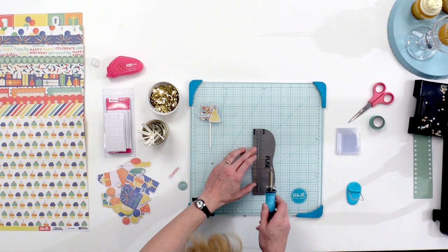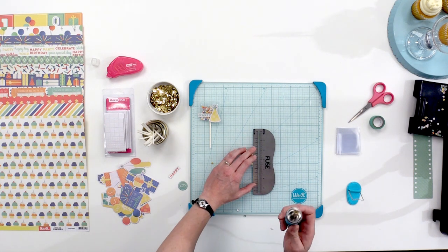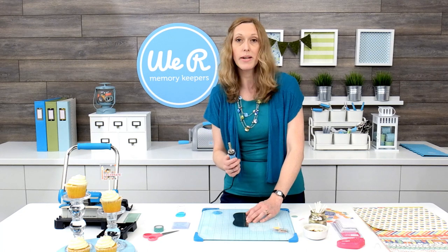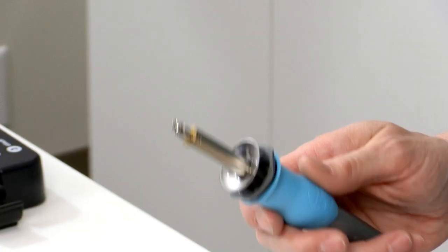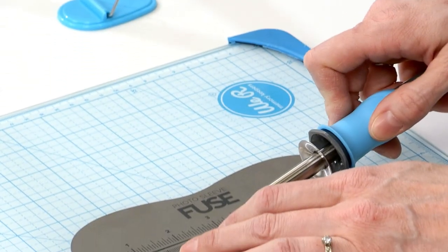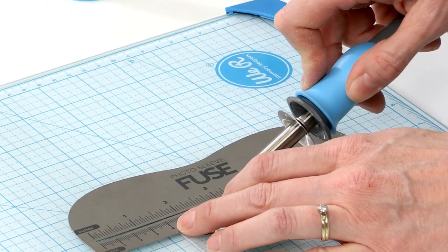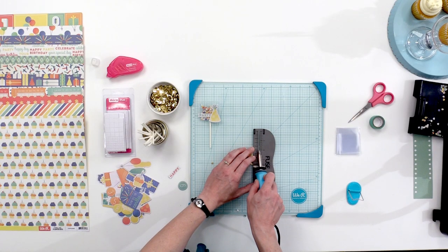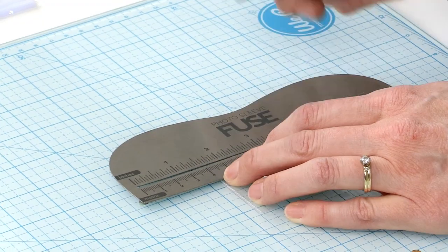Okay, then I'm going to take my tool, and I've got the fusing tip on the end, but there's also a cutting tip that you can use if you need to cut your photo sleeves. So then we're just going to roll this across with some nice, even pressure, not too fast, not too slow.